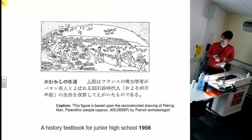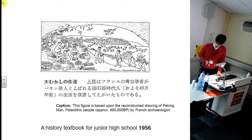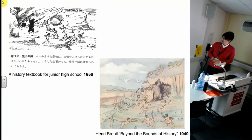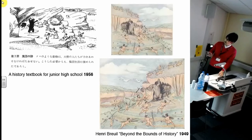The post-war visualization was created by interaction with Western scholars. Under the influence of Western scholars, one image is based upon a reconstructed drawing of Peking Man by a French archaeologist. This image was from a history textbook for junior high school in 1956. Another image also from a junior high school history textbook is obviously a carbon copy of Beyond the Bounds of History from 1949 — the images are very similar to each other, with no reference.